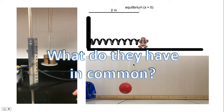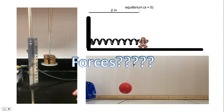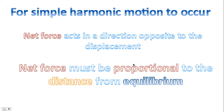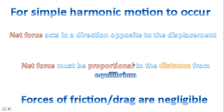So what do these three examples all have in common? What they have in common is the type of forces acting on them. For simple harmonic motion to occur: the net force must act in the direction opposite to the displacement; the net force must be proportional to the distance from equilibrium; and the forces of friction or drag must be negligible.